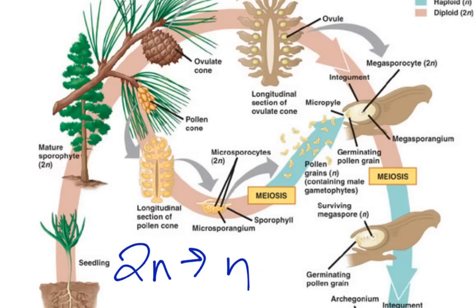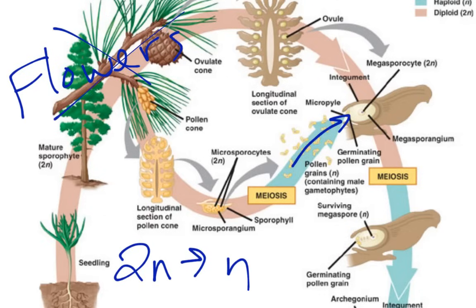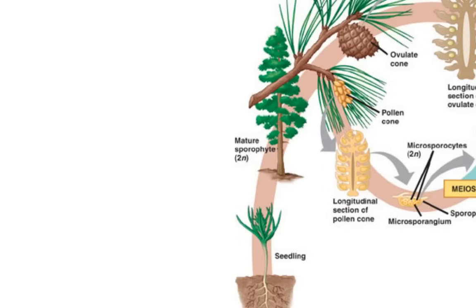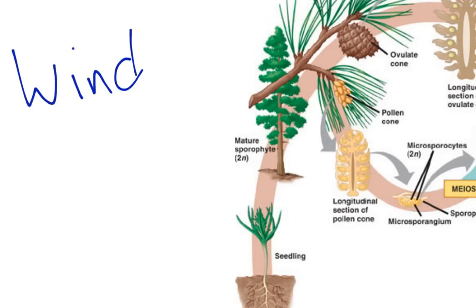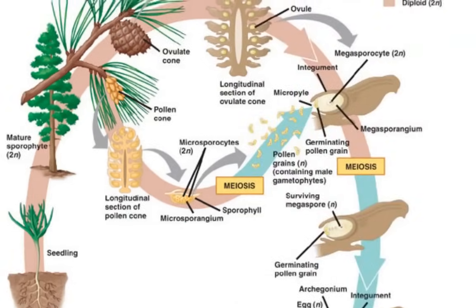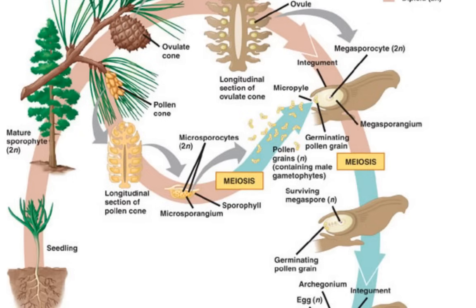Eventually, one of these pollen grains is going to find its way to the micropile of the ovule to begin fertilization. One thing we have to remember is that gymnosperms have no flowers, so they are going to reproduce by wind. Flowering plants attract pollinators to carry pollen, but gymnosperms just rely on windblown pollen to eventually make its way to a micropile of an ovule and begin the process of fertilization.